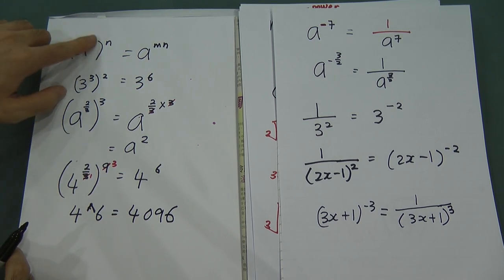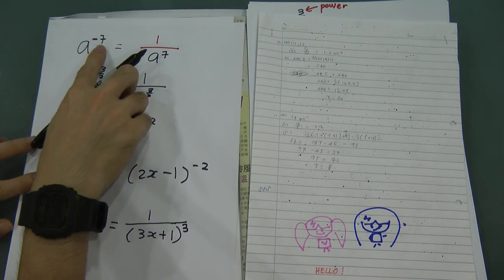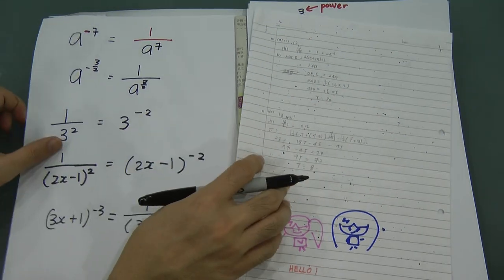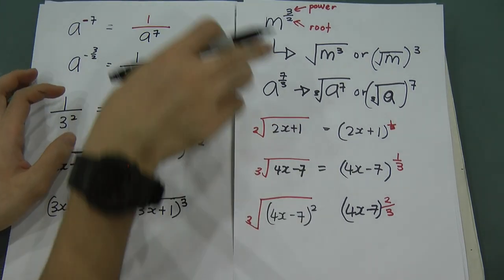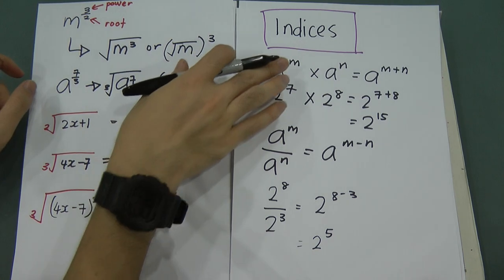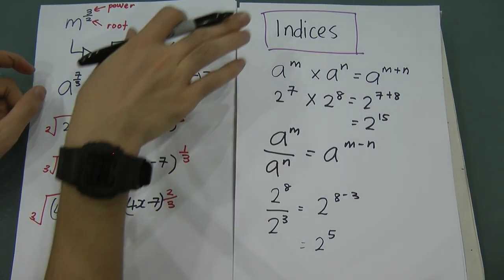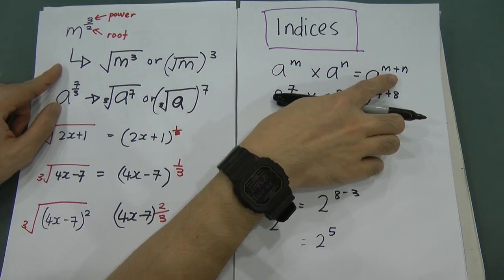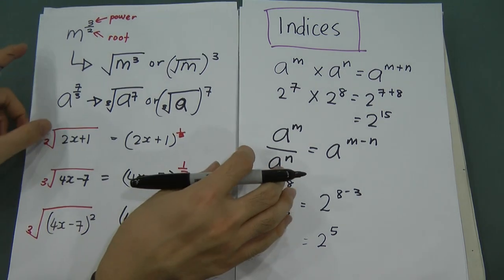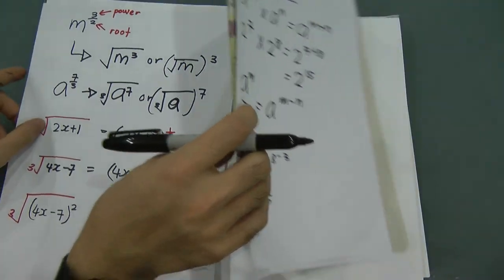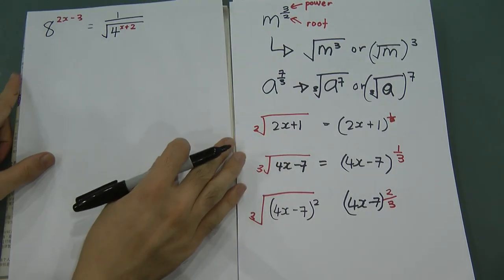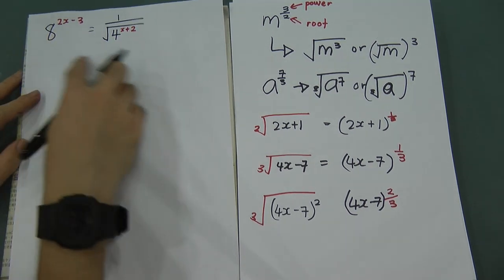To summarize: when you see negative, it means 1 over. So 1 over 3 to the power of 2 equals 3 to the power of negative 2. When you see a fraction in the power, top means power and bottom means root. When multiplying, add the powers; when dividing, subtract the powers.